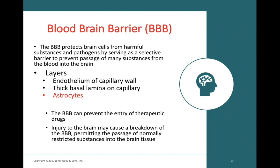The blood-brain barrier can be damaged, loosening junctions between cells and allowing substances to leak into the brain that wouldn't normally pass. It is a very effective wall against harmful substances but is susceptible to damage and must be taken into account when applying different drugs to patients.